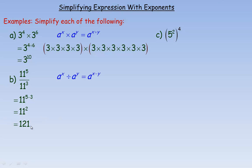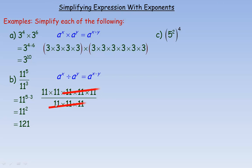11 squared isn't that big a number, so we can easily write that as 121. A common misconception here is to divide the bases — 11 divided by 11 is 1, raising 1 to a power — but that is incorrect. 11 to the fifth means five 11s multiplied in the numerator, and 11 cubed means three 11s in the denominator. When we subtract the exponents, we're dividing out 11 times 11 times 11, leaving two 11s multiplied, which is 11 squared — and that's why the answer is 121.